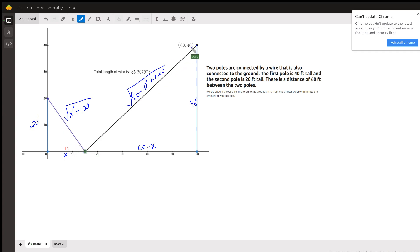To minimize the amount of wire, what we need is a function that gives us the amount of wire that we're going to use depending on this anchor point. So if we let this distance right here be x from the base of the short pole to the anchor point, then by the Pythagorean theorem...